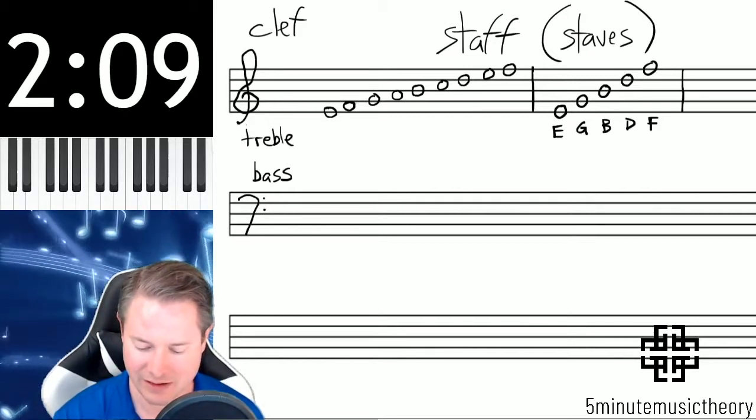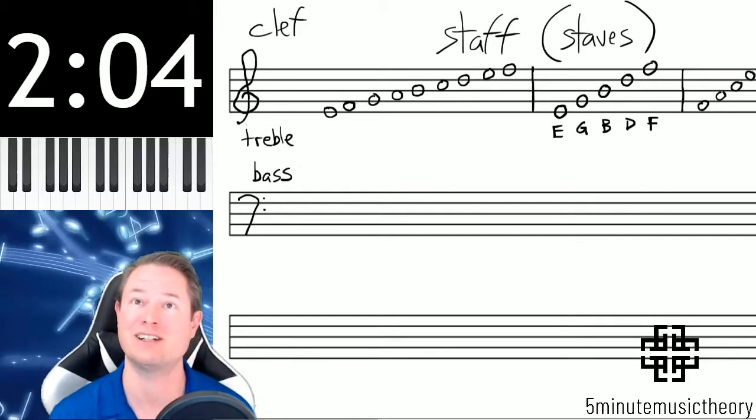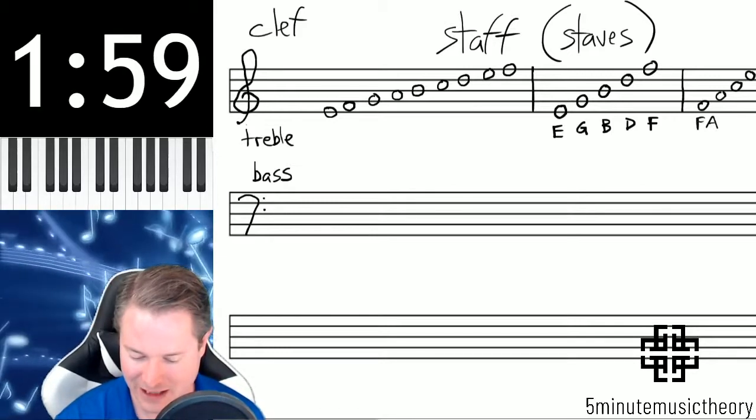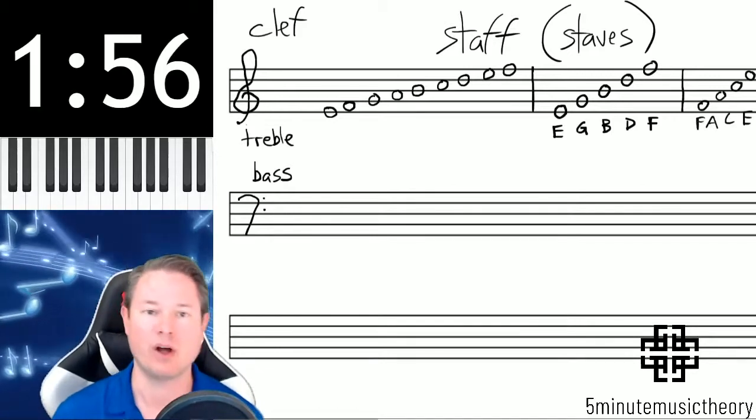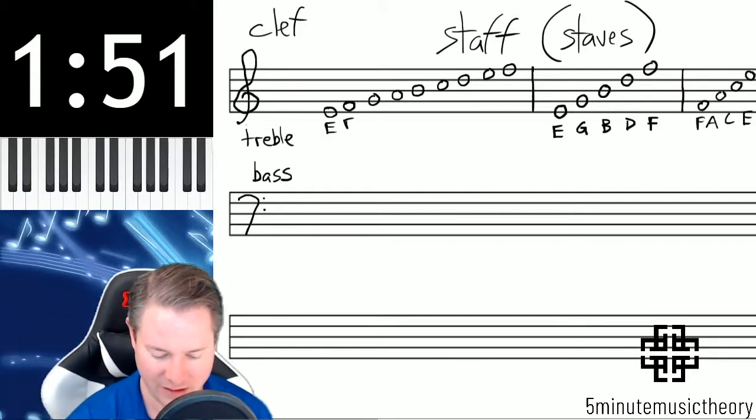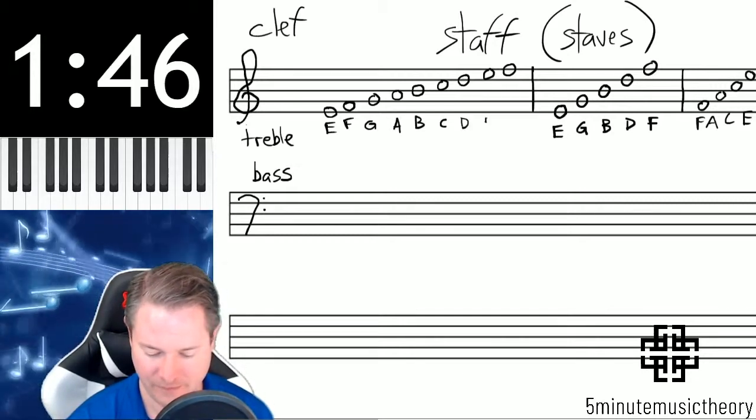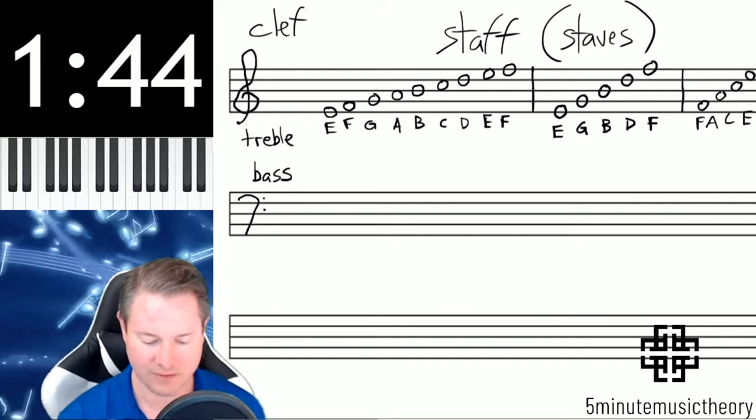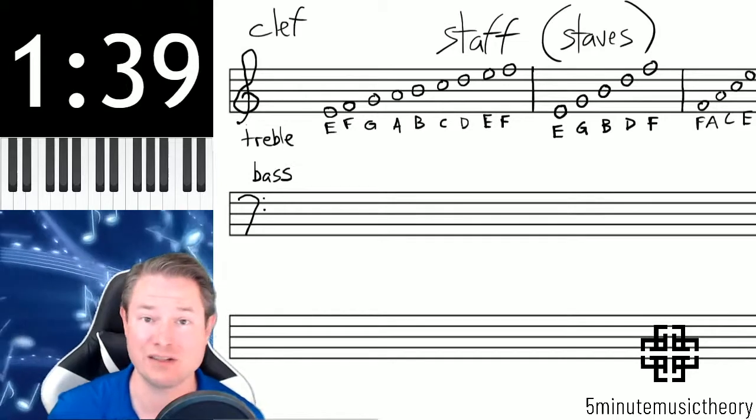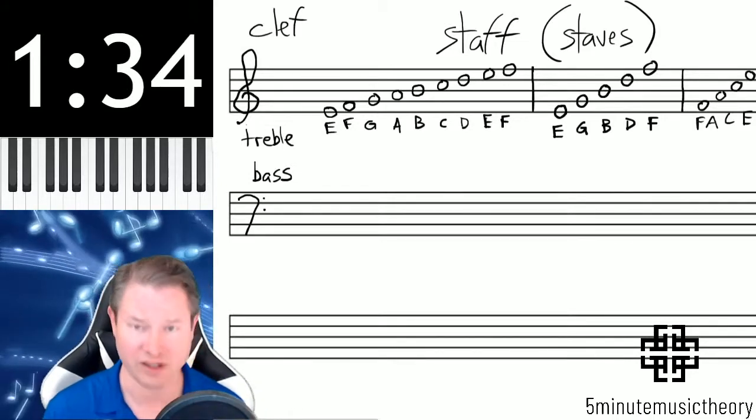And then conveniently the notes that are in the spaces are F-A-C-E, and they spell the word face. So if we look all the way from left to right here in treble clef, we go through the musical alphabet from one E all the way through past another E to another F. I'll explain in a video soon to come why there are multiple of the same letters here, like a couple of E's.